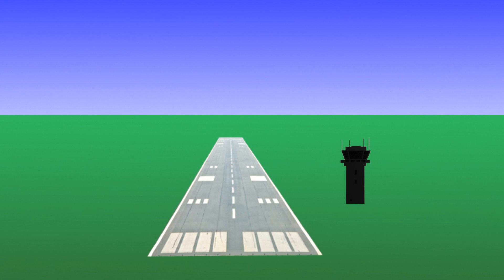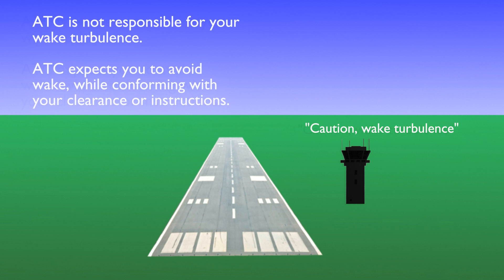Depending on the circumstances, air traffic control may inform you of traffic you are following at a proximity such that wake turbulence will be a factor. Air traffic control will use the phrase 'caution wake turbulence' and advise you of the traffic. Air traffic control is not responsible for your wake turbulence avoidance. The controller will expect you to adjust your flight path as necessary to avoid the wake turbulence while conforming with your air traffic control clearance or instructions. If you're unsure about where the turbulence is, or you are uncomfortable, don't hesitate to take the appropriate action, such as performing a go-around and reporting to the tower that you weren't comfortable with the wake turbulence. Oftentimes taking a delay of only a few minutes will allow that wake turbulence to dissipate.